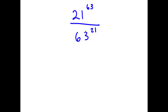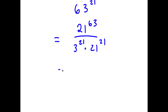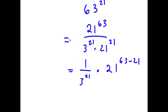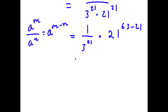In this problem, I have 21 to the power of 63 over 63 to the power of 21. To solve this, I'm going to first rewrite this as 21 to the power of 63 over 3 to the power of 21 times 21 to the power of 21. This is the same as 1 over 3 to the power of 21 times 21 to the power of 63 minus 21, because a to the power of m over a to the power of n equals a to the power of m minus n. So 21 to the power of 63 minus 21 is 21 to the power of 42, and I have this over 3 to the power of 21.